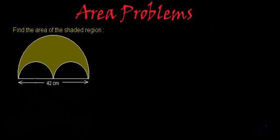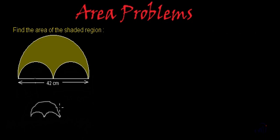Here we have to find the area of the shaded region. If we see properly, this shaded region is actually a part of the semicircle. Here we have a big semicircle and then we are cutting off two small semicircles from this big semicircle.